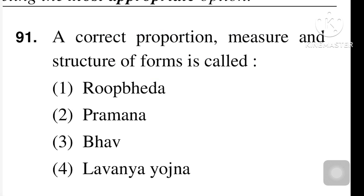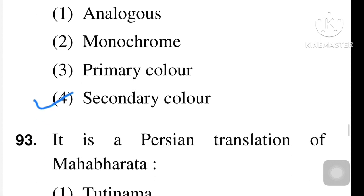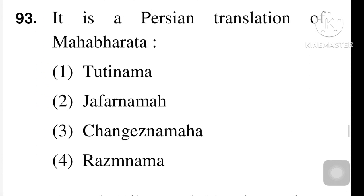Proportion, measure and structure of forms is called — four options: Rupbheda, Parmana, Bhav, and Lavanna Yojna. Option number two is the right answer: Parmana. Next question: color obtained by mixing two primary colors is called secondary color. Option number four is the right answer.